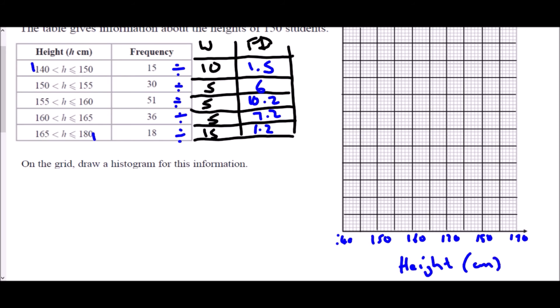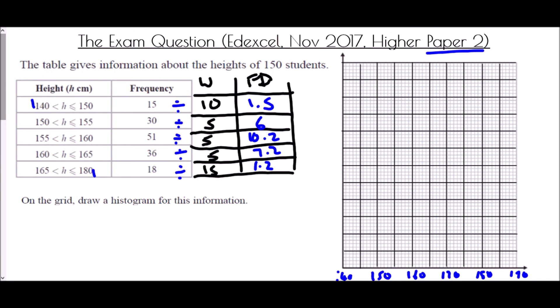And then in terms of the frequency density, the highest we need to get to is 10.2. So we just need to check how many spaces we've got. We've got 12. And so as there are 12, that is suggesting that we probably want to start at 0 and just go by 1 each time. And now we can definitely get all the way up to 10.2 when we draw our bars.